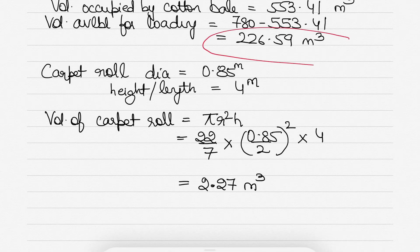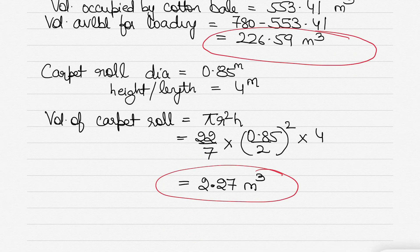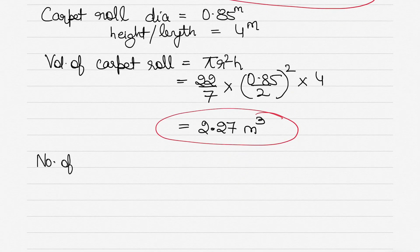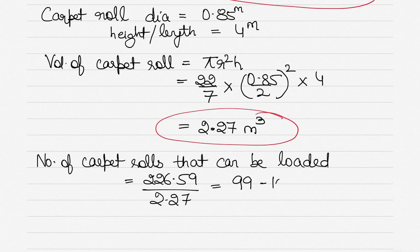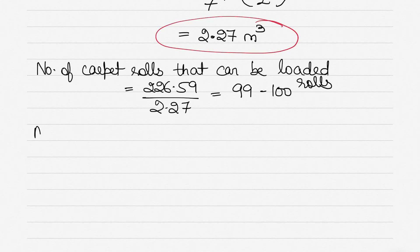Volume available = 226.59 cubic metres; volume of each carpet roll = 2.27 cubic metres. Number of carpet rolls = 226.59 ÷ 2.27 ≈ 99 to 100 rolls. We round to a whole number since you cannot have a decimal number of rolls — that's the practical answer you would give on a ship as well.